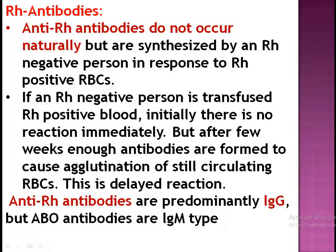Regarding RH antibodies, they do not occur naturally but are synthesized by an RH negative person in response to RH positive red blood cells. So, if there is a mismatched blood transfusion, only then will antibodies regarding the RH group be produced. Otherwise they are not naturally present, as we have in the ABO system. In the ABO system, antigens of the person are present and antibodies related to the other type so that they may react with foreign antigen. In the RH group, antibodies will be produced only in response to foreign antigen at that time.